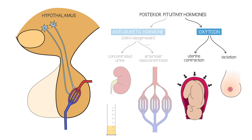You might then ask why the uterus doesn't contract and the mother doesn't go into labor again every time the baby breastfeeds, if both of these things are controlled by oxytocin. This is because the oxytocin receptors on the uterus are downregulated after birth. Remember that changing patterns of receptor expression can be used to change the function of a hormone in the body.